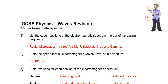3.3 Electromagnetic Spectrum Memo 1. List the seven sections of the electromagnetic spectrum in order of increasing frequency. Starting with the lowest frequency, we've got radio, microwaves, infrared, visible, ultraviolet, X-ray, and gamma.